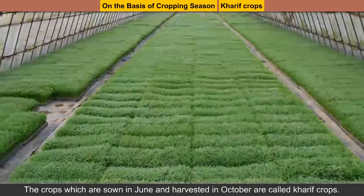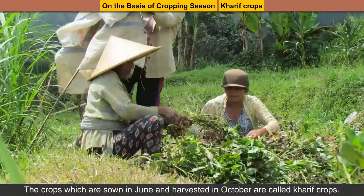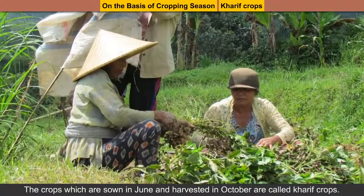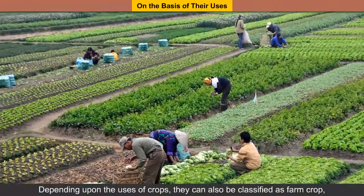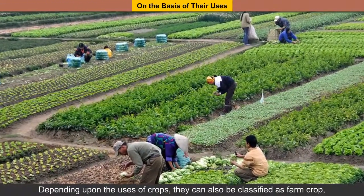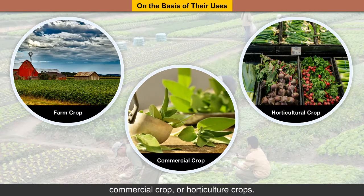Kharif crops: The crops which are sown in June and harvested in October are called Kharif crops. For example, rice, maize, bajra, coconut, groundnut, etc. On the basis of their uses, depending upon the uses of crops, they can also be classified as Farm crop, commercial crop or horticulture crops.